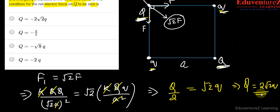Capital Q is equal to 2 root 2Q and we have already assumed it as negative. So the first answer is the correct answer. I hope you understood this question. Thank you.